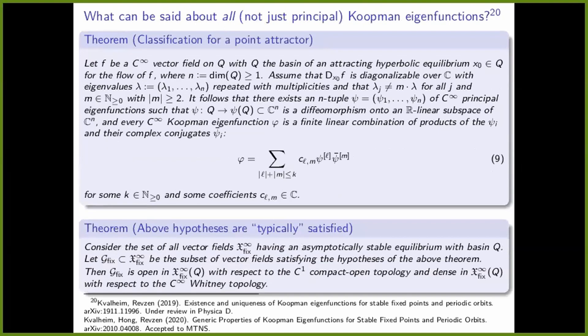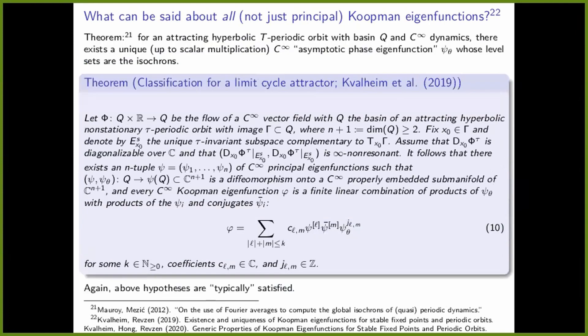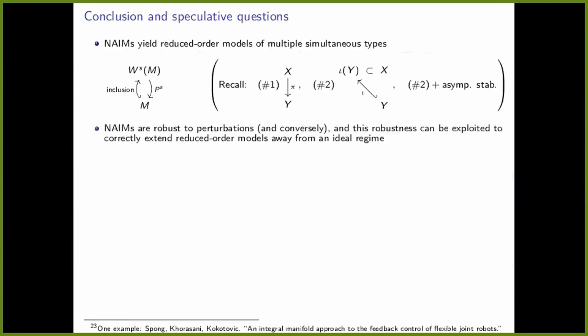With that, I'd like to conclude. I hope to have convinced you that NIMs yield reduced order models of multiple simultaneous types, are robust to perturbations, and this robustness can be exploited to correctly extend reduced order models away from some very idealized regime. I think it would be interesting to explore whether other real-world systems are amenable to similar corrections to reduced order models.